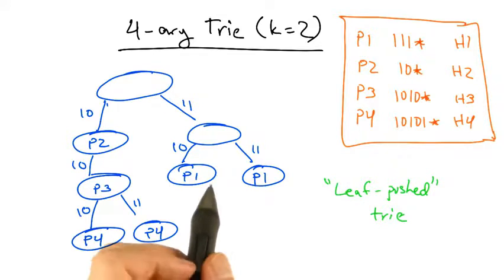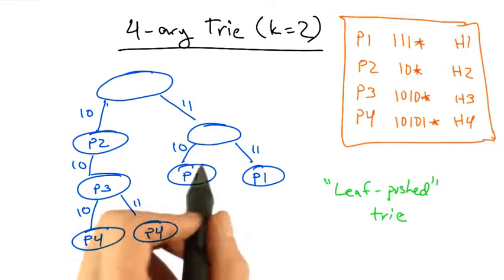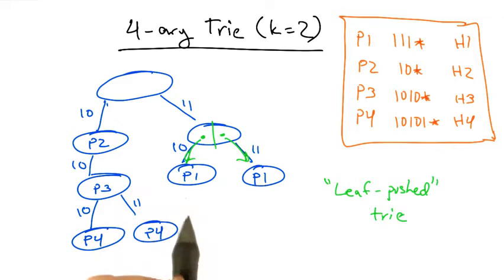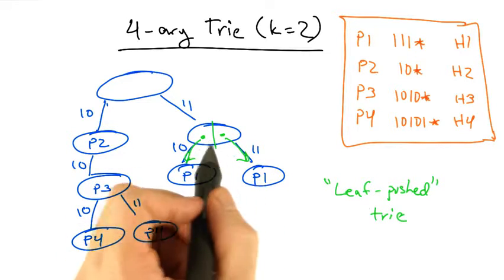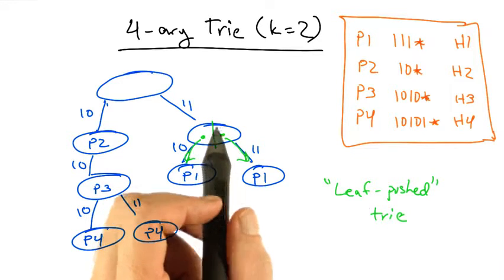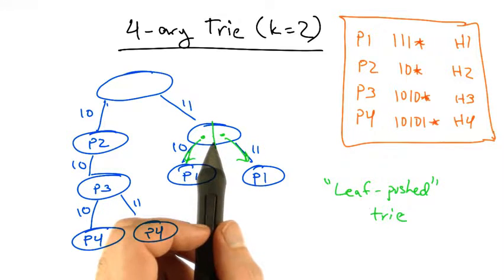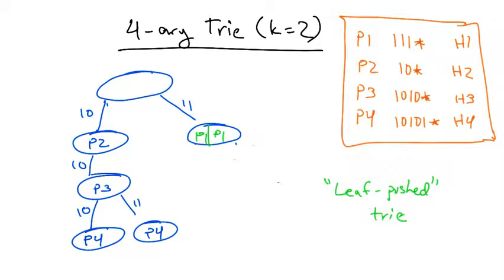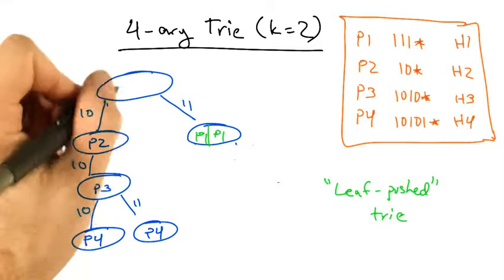One thing we can do to save space further is create what's called a leaf pushed trie. In such a setting, we can save ourselves some space. Instead of having these pointers, we can push these entries into the left and right side of this node, respectively. So 1, 0 becomes p1 on the left side, and 1, 1 becomes p1 on the right side.